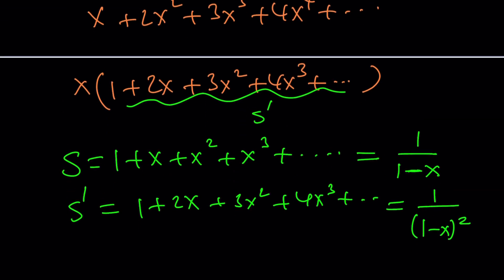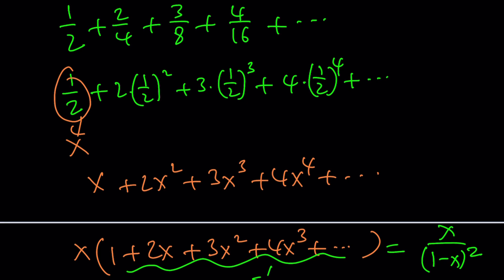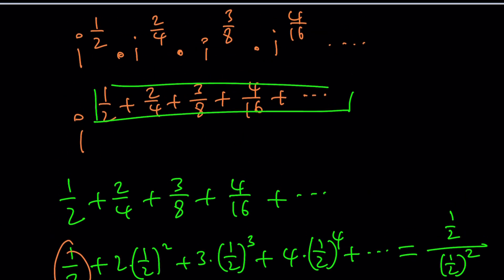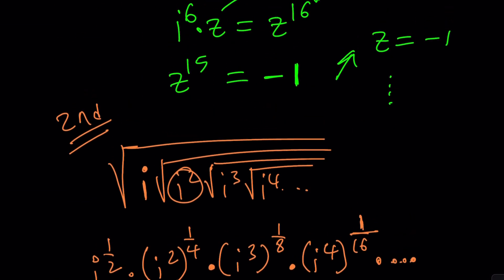Now we can plug it in. This becomes x over one minus x quantity squared. If x is one half, then this becomes one half divided by one half squared. One half squared is one fourth. One half goes into one fourth two times. So that will be a two. Wow, that is our power, remember? It was i to the power of something, which happens to be two. So the answer is i squared, which happens to be negative one. Well, my first method was actually correct because it gave me negative one as the answer.